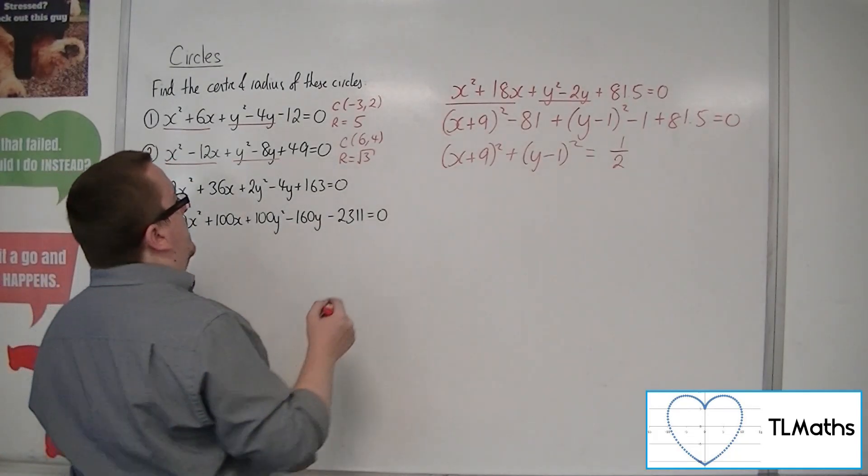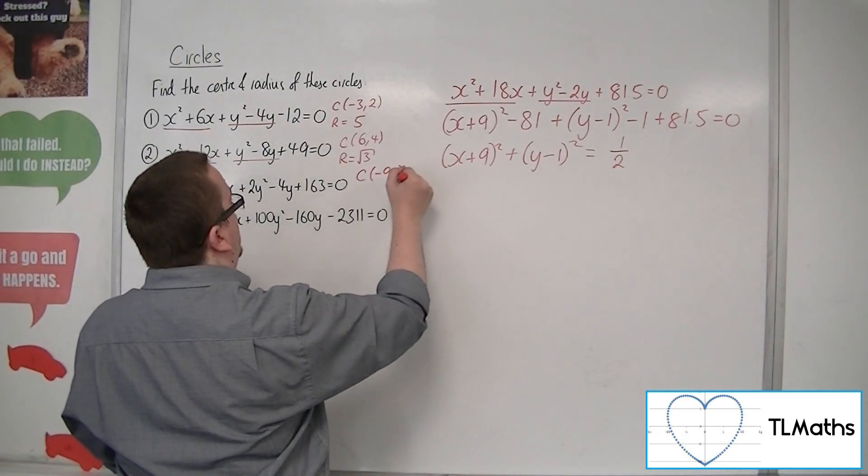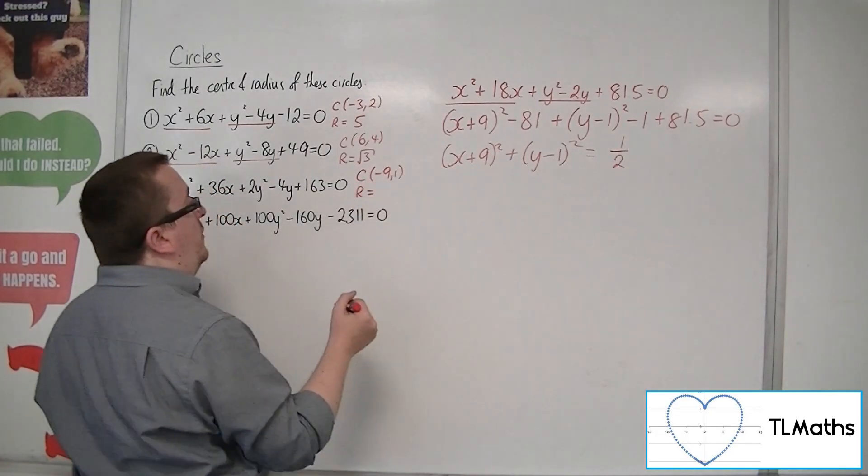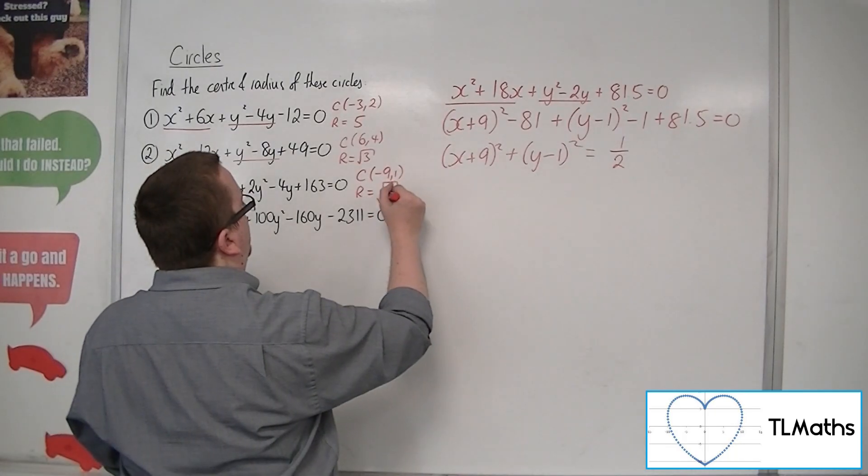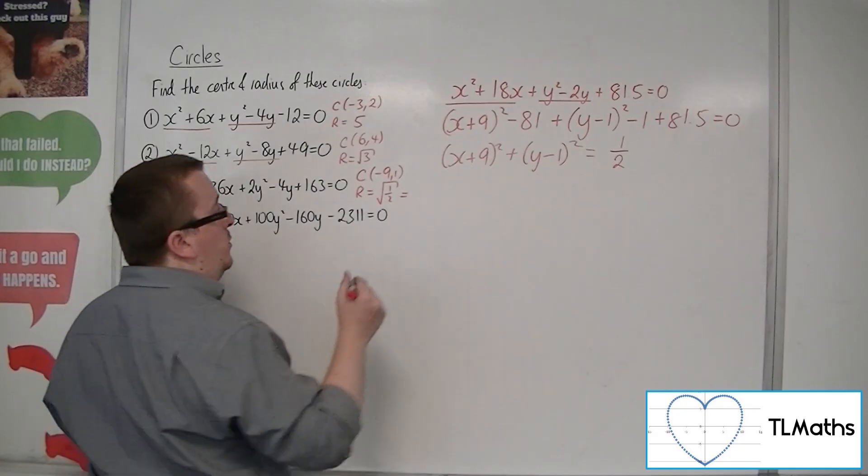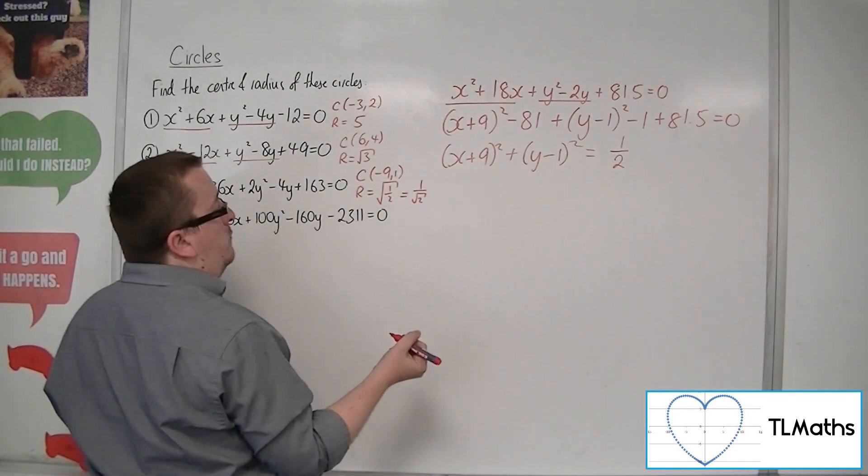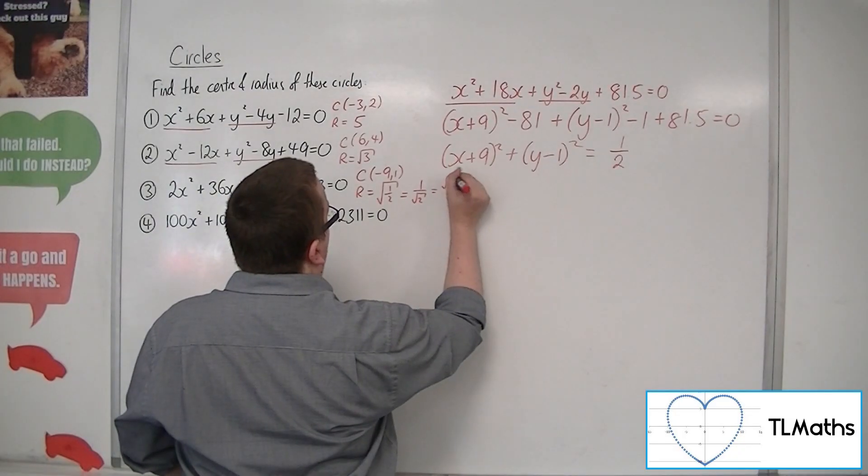So then we know that the centre is going to be at minus 9, 1, and the radius will be the square root of a half, which is the same as 1 over root 2, which if you simplify that, rationalise the denominator, will give you root 2 over 2. That's your radius.